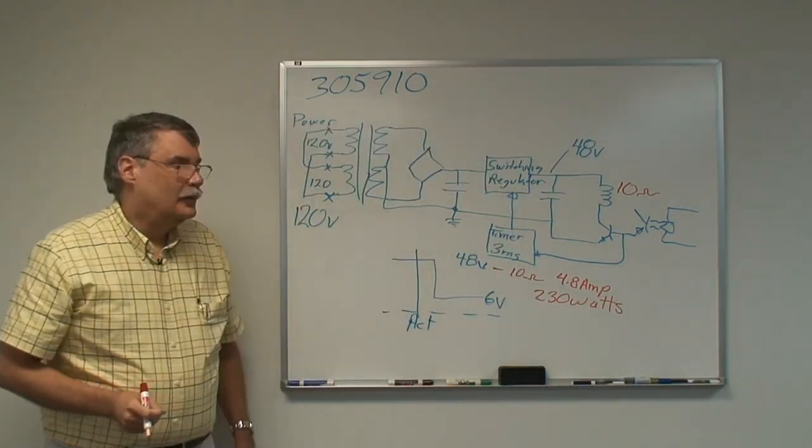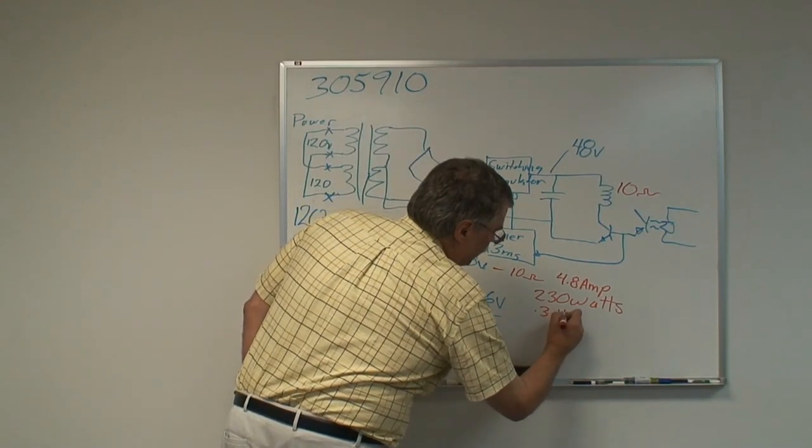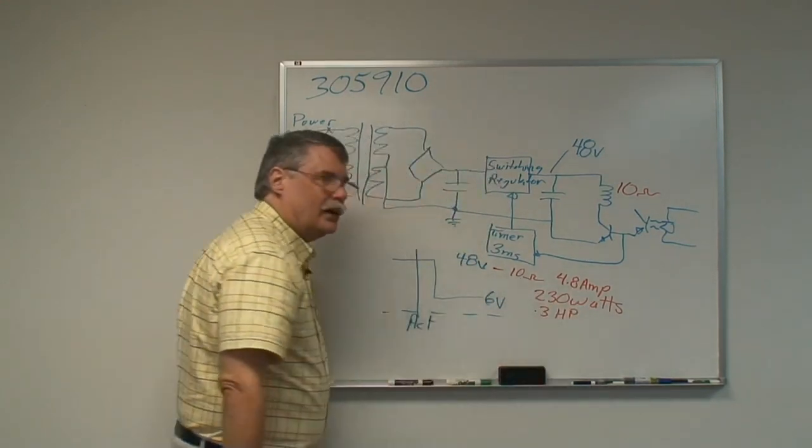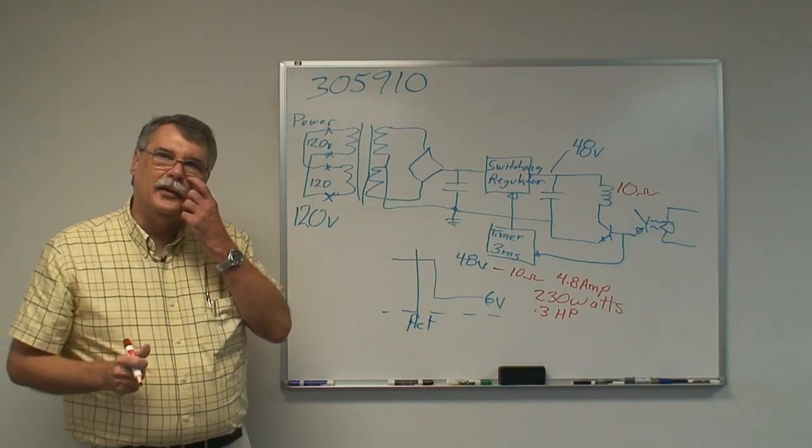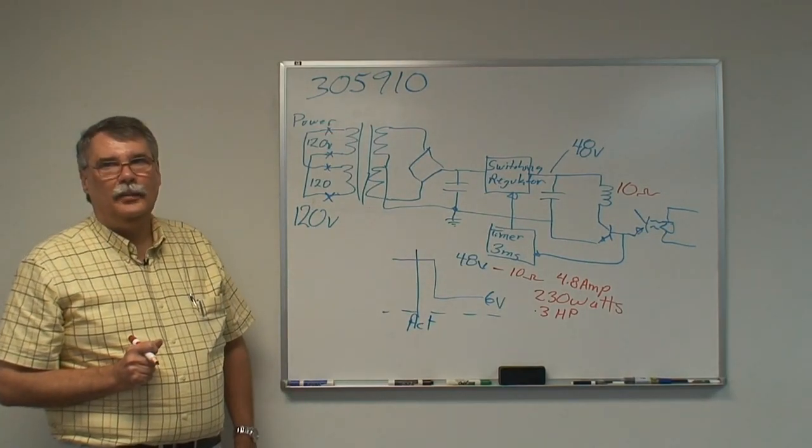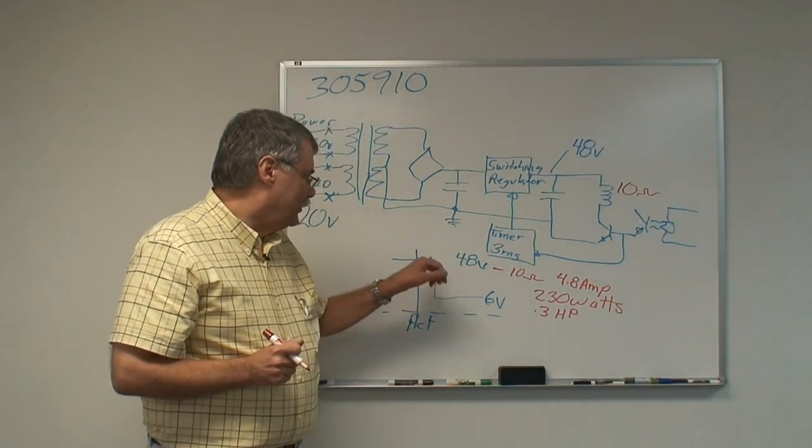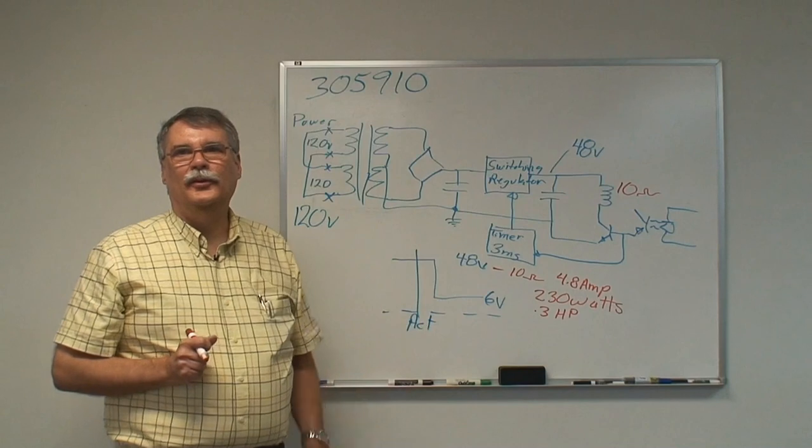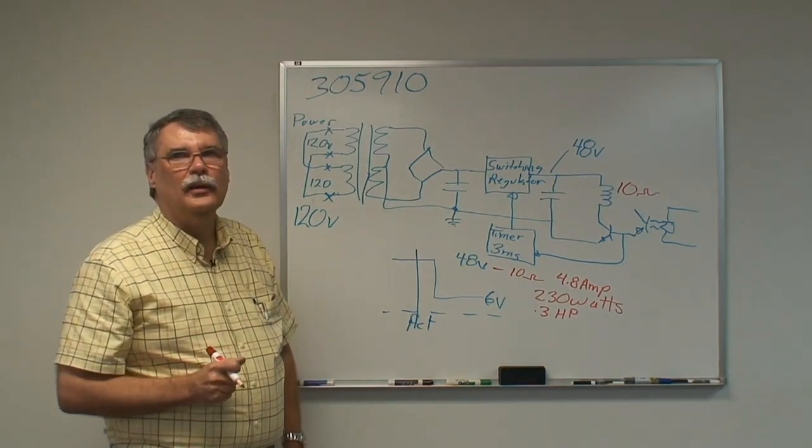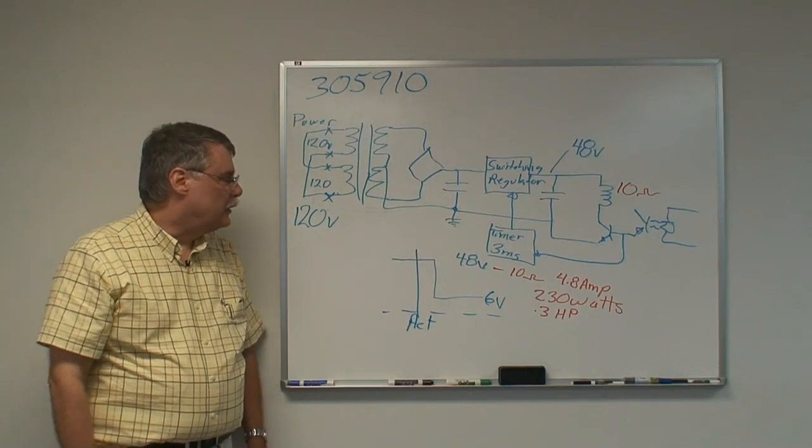That's a lot of power. 230 watts is 0.3 horsepower. So we're going to use 0.3 horsepower for 3 milliseconds to lift that plunger up off the seat. And that's why this whole gun driver thing is so essential in getting all this stuff to work. We're hitting this thing with a big hammer. We're really driving this thing hard.